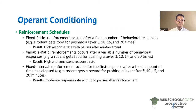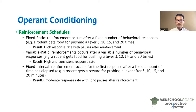Next, we have fixed interval. Fixed interval occurs when the reinforcement is given for the first response after a fixed amount of time has elapsed. It doesn't matter how many times the rodent pushes the lever within a given timeframe — they only get rewards at fixed time intervals. For instance, a rodent can get a reward after 5, 10, 15, and 20 minutes. In the first five minutes, when they push the lever the first time they'll get a reward, but a second, third, or fourth press within that five minutes won't produce another reward. They have to wait another five minutes before they can get a second reward.